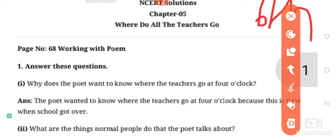Why does the poet want to know where the teachers go at 4 o'clock? So this answer you will write like this: The poet wanted to know where the teachers go at 4 o'clock because this is the time when school got over.